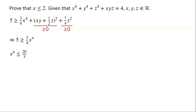Rearranging the inequality, we have x to the power of 4 is less than or equal to 20 over 3, which is less than 7. So x squared is less than the square root of 7, which is less than 3. Therefore x is less than or equal to 2. The proof is complete.